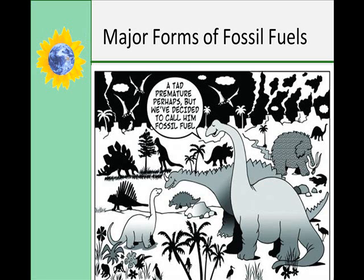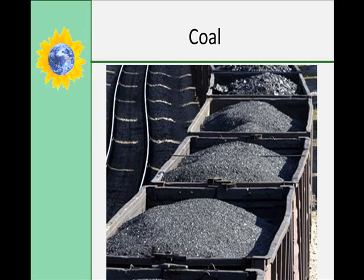Coal is derived from the accumulation of partially decayed land plants. As the sediment solidifies into rock, the organic material decomposes under great pressure and high temperatures. Coal is an abundant fossil resource consisting mostly of carbon. Its energy content, measured in BTUs per pound, ranges from 5,000 to 15,000 depending on the type. Electric utilities consume about 87% of total coal produced, and in the United States, coal is used to generate more than half of all electricity. It's also used as a basic energy source in many industries and as a heating fuel.